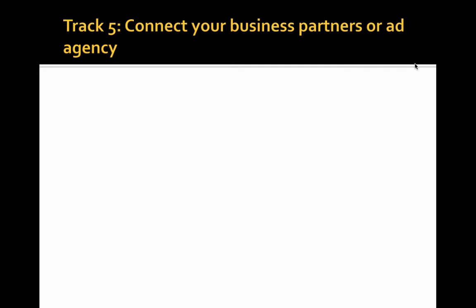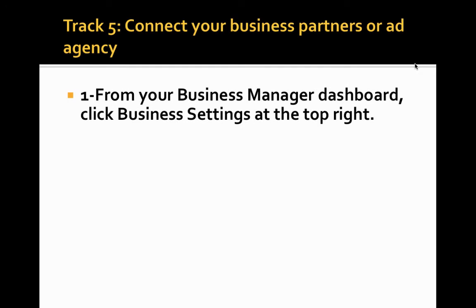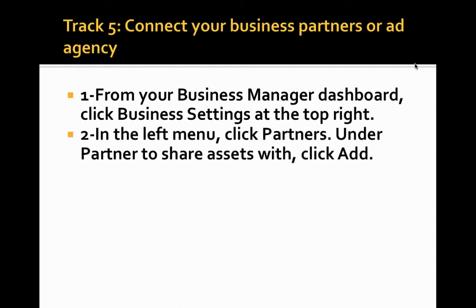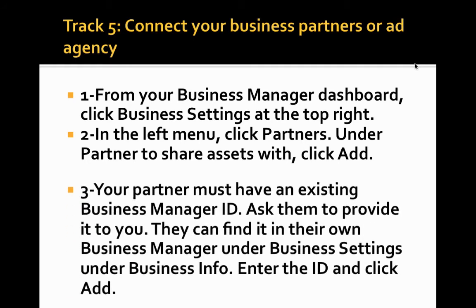Track five: Connect your business partners or add an agency. Step one: from your Business Manager dashboard, click Business Settings at the top right. Step two: in the left menu, click Partners. Under 'Partner to share assets with,' click Add. Step three: your partner must have an existing Business Manager ID — ask them to provide it to you. They can find it in their own Business Manager under Business Settings, under Business Info. Enter the ID and click Add.